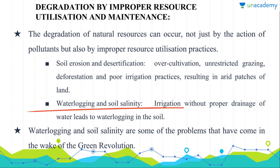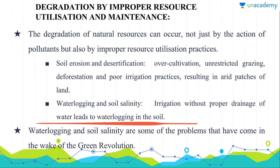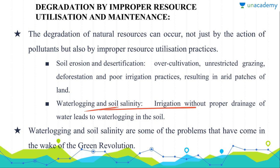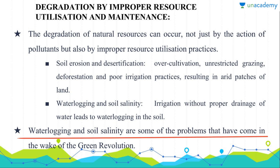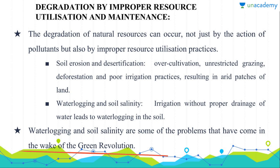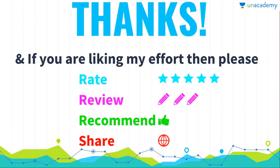Now we have water logging and soil salinity. Irrigation without proper drainage of water leads to water logging in the soil and finally to an increase in soil salinity. Water logging and soil salinity are some of the problems that have come in the wake of the Green Revolution, particularly in Punjab.